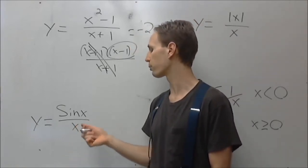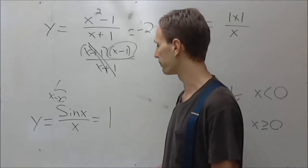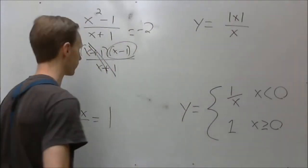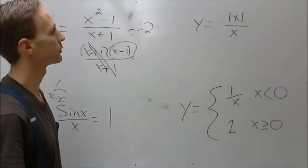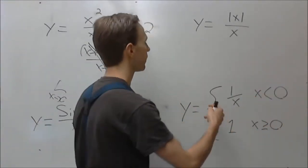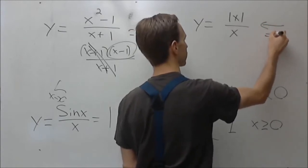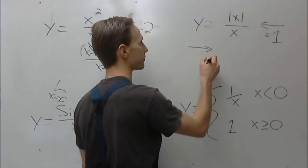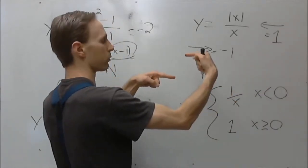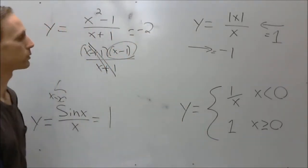Similarly, sine x over x has a removable discontinuity at x equals 0 because the special trig limit exists and equals 1. However, x over the absolute value of x has a non-removable discontinuity at x equals 0. The limit from the right gives positive 1 (drop absolute value bars), but the limit from the left gives negative 1. The left and right-handed limits don't agree, so this is a non-removable, jump-type discontinuity at zero.